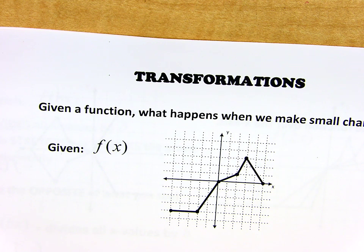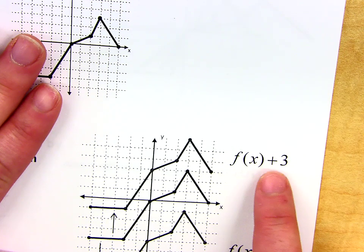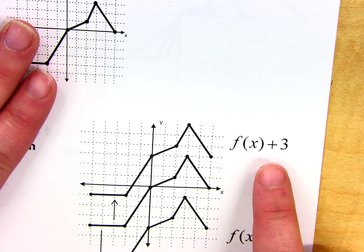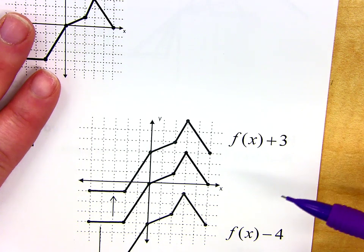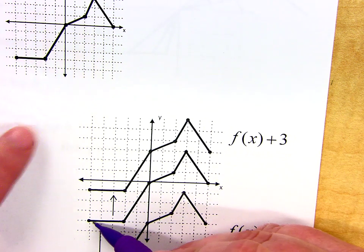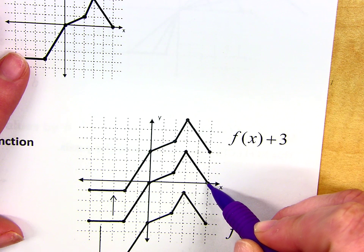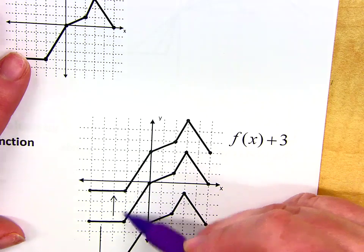So what happens if you take some function and then you add or subtract a number from it? If I took this function exactly as it is and then I added 3 to it, I have the original graph right here, and then when I added 3 to everything, it just shifted everything up 3 units. Do you see how every point is just moved up?